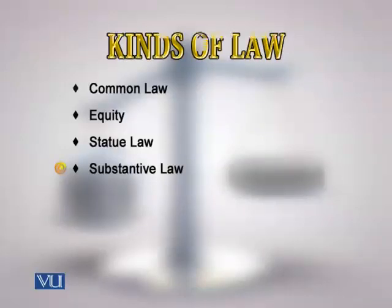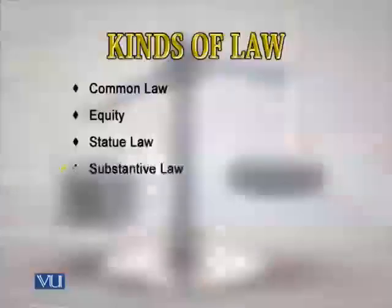The next kind is Substantive Law. Substantive law defines rights and obligations — it fixes and establishes what the rights and obligations are. To reach those rights and obligations, procedures are adopted. For example, if a person commits murder, the substantive law is found in the Pakistan Penal Code, which states that the punishment for murder is death or life imprisonment.